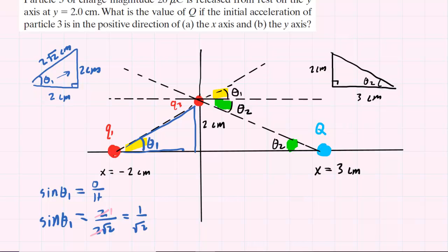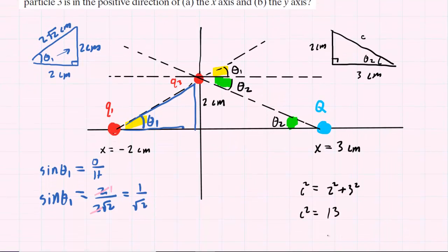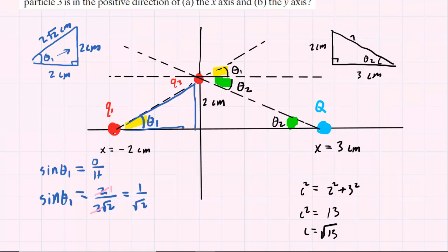We need the hypotenuse again, and we'd have to use the Pythagorean theorem here — there is no simple expression for the hypotenuse. So for now we'll just call this C. C squared equals 2 squared plus 3 squared, so C squared equals 4 plus 9, which is 13. Therefore, C is the square root of 13. So we'll label this hypotenuse the square root of 13 centimeters.